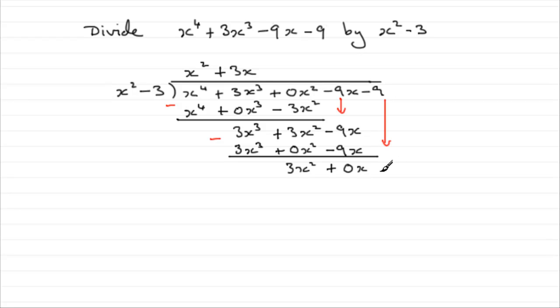Bring down the minus 9 now. And we've got minus 9 on the end. And start all over again. What do you multiply the x squared with to give 3x squared? Well, it's going to be plus 3.